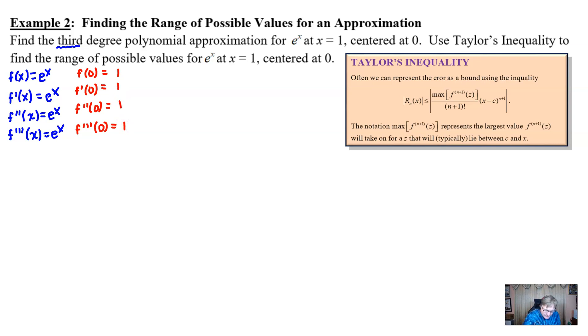So by the time we put together our polynomial, p sub three of x, we learn that it's just simply one plus one over one factorial times x minus zero to the first, plus one over two factorial, plus one over three factorial, which I'm going to go ahead and simplify to six, times x to the third.